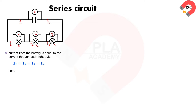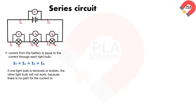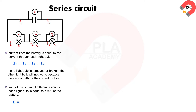So, if one light bulb is removed or broken, the other light bulbs will not work, because there is no path for the current to flow. The sum of the potential difference across each light bulb is equal to the EMF of the battery. So, EMF E equals V_1 plus V_2 plus V_3.